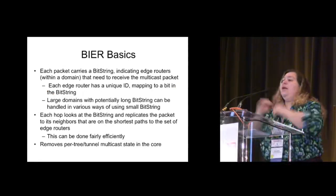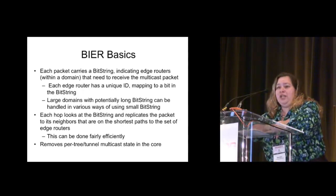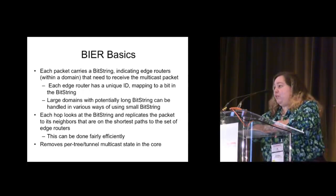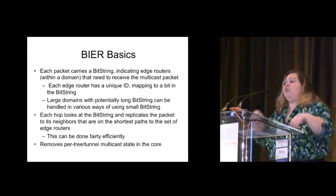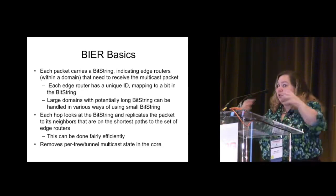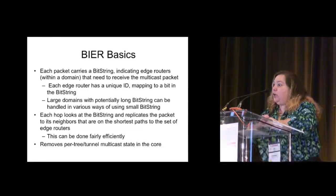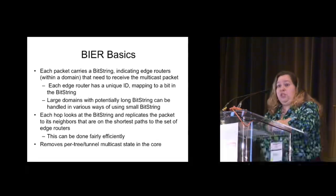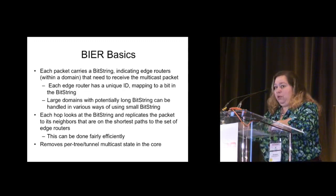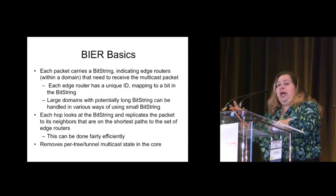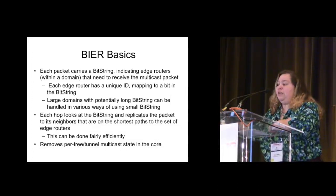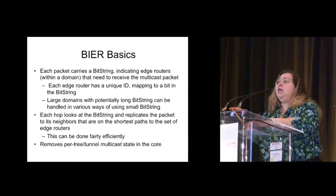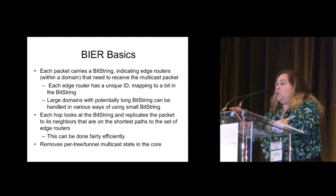Here's the basic idea. You take all of your edge routers, and each gets assigned a bit in a bitmap. Each packet carries a bit string which corresponds to the edge routers that are supposed to get the packet. You may say you've got a lot of edge routers — so you can do a trade-off between ingress replication and duplication in the core, depending on how long your bit string is. The default they're talking about is 256 bits. Each hop, you look at the bit string and you look at a new forwarding table called a BIFT — I'll show you what that looks like on the next page — and replicate out to the necessary neighbors based on the BIFT. No per-tree or tunnel multicast state. The BIFT is forwarded based on your shortest path to those particular destinations.